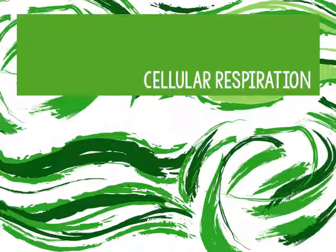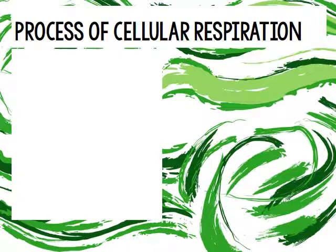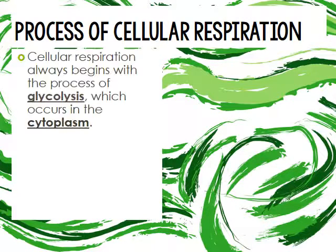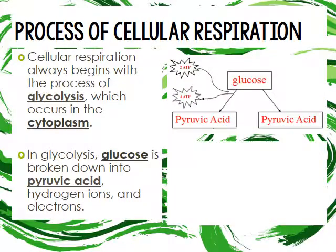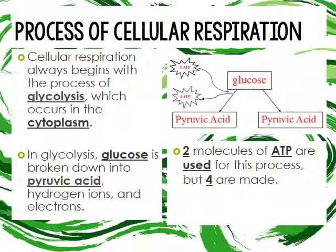Now let's talk about cellular respiration. The process always begins with glycolysis, which occurs in the cytoplasm. Glucose is broken down into pyruvic acid, hydrogen ions, and electrons. Two ATP molecules are used to start this process, even though four are made — so the net product of glycolysis is two ATP.